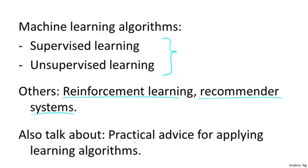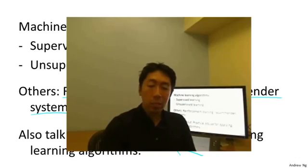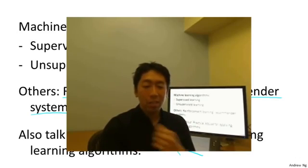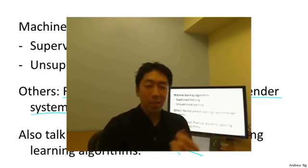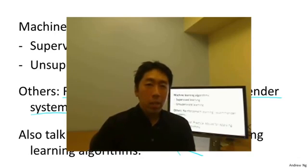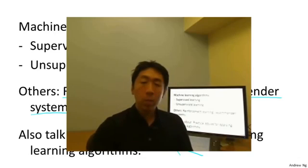One of the other things we'll spend a lot of time on in this class is practical advice for applying learning algorithms. Teaching about learning algorithms is like giving a set of tools, and equally important — or more important — than giving you the tools is teaching you how to apply them. I'd like to make an analogy to learning to become a carpenter. If someone teaches you carpentry by saying here's a hammer, here's a screwdriver, here's a saw — good luck — that's no good. The more important thing is to learn how to use these tools properly. There's a huge difference between people who know how to use machine learning algorithms well versus those who don't.